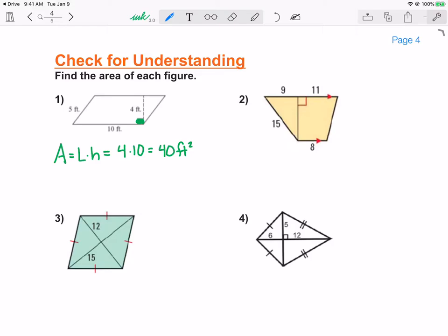Next one, trapezoid. I need to find the length of my bases, which are both going to be parallel to each other. So add the 9 and the 11 together. That gives me 20. The other base is 8. But I don't know the height, because I need whatever is perpendicular to these sides. But what I do know is this is a 3, 4, 5 triangle with a scale factor of 3, because 9 divided by 3 is 3, and 15 divided by 5 is 3. So this height is actually 12. So I'm going to do area equals sum of the two bases times the height, and divide that result by 2. And I get 168 squared.